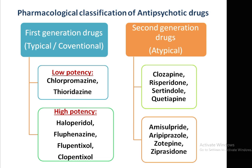Clopentixol is also a high potency first generation drug. Second generation drugs are atypical antipsychotics and include clozapine, risperidone, sertindole, quetiapine, amisulpride, aripiprazole, zotapine, and ziprasidone.